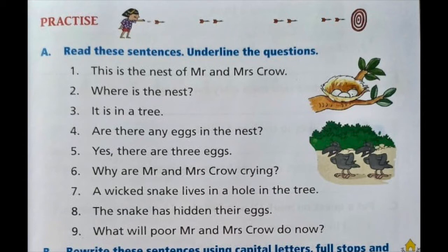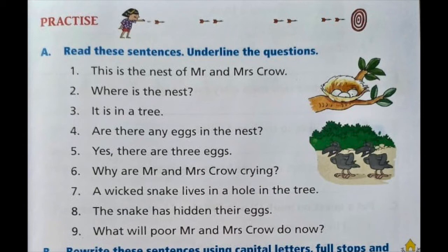Number three: 'It is in a tree.' It is saying something but not a question, so we will not underline it. Number four: 'Are there any eggs in the nest?' — question mark. So it is a question — underline it. Number five: 'Yes, there are three eggs.' A statement with a full stop, not a question. Number six: 'Why are Mr. and Mrs. Crow crying?' — asking a question, question mark. So it is a question — underline.